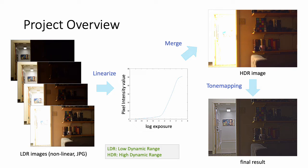First, linearize LDR images by solving the optimization problem. Second, merge linearized images into one high dynamic range image. Finally, tone map the HDR image to display the scene in a human recognizable way.